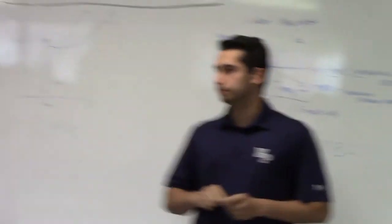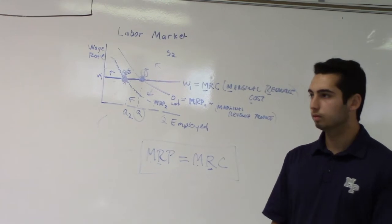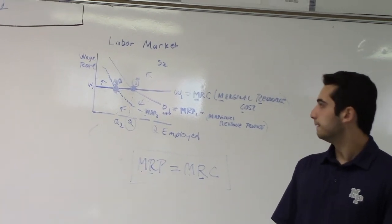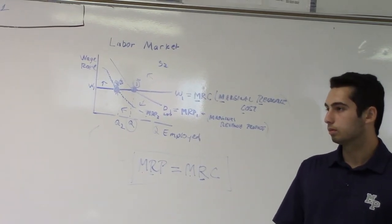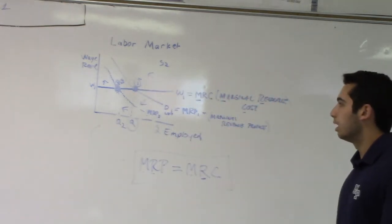Part D. Single cinema hires workers in a perfectly competitive labor market with a downward sloping demand. Suppose the number of workers available in the market decreases. What will happen to the wage rate? Explain.